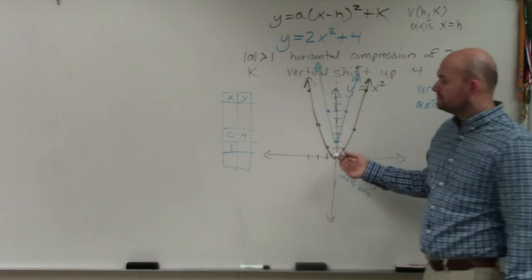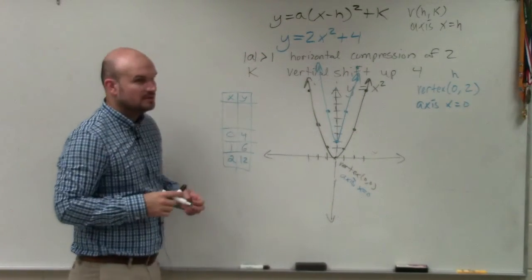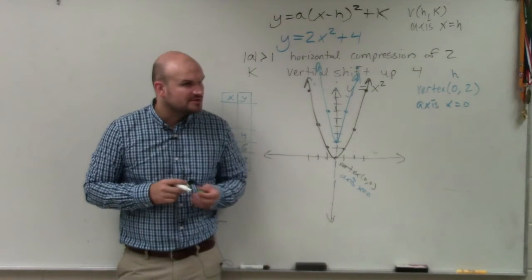OK. So it would be over, so 1 is 6, 2 is 12. Does that kind of make sense? Or do you still have questions on that?